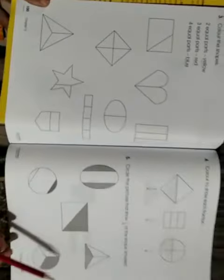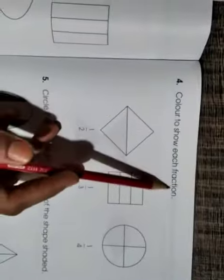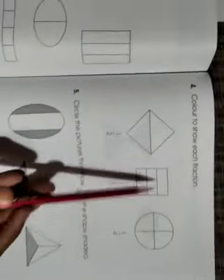Another page is 101, in which you have to color to show each fraction. For one upon two, as I explained, you will color one part with any color.